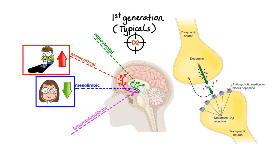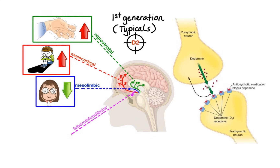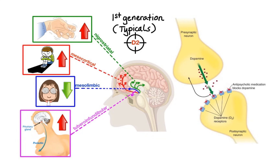Furthermore, blockade of dopamine receptors in the nigrostriatal pathway may lead to extrapyramidal disorders, tardive dyskinesia, and Parkinson's-like symptoms such as tremors, muscle rigidity, and difficulty in starting and stopping movements. Lastly, blockade of dopamine receptors in the tuberoinfundibular pathway may cause increased blood prolactin levels, which may then lead to galactorrhea, gynecomastia, and sexual dysfunction.